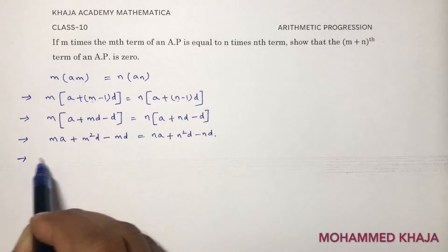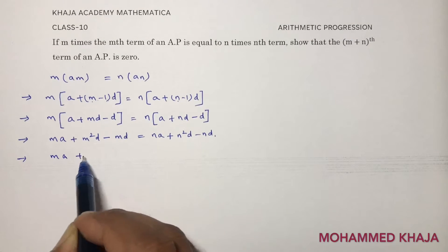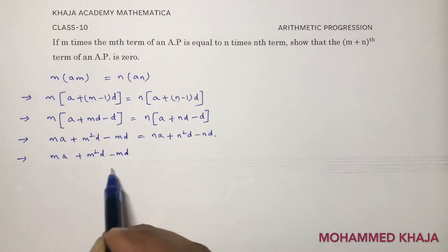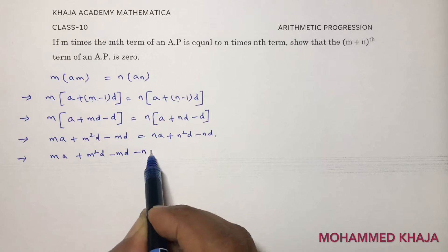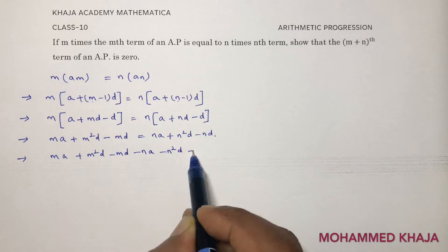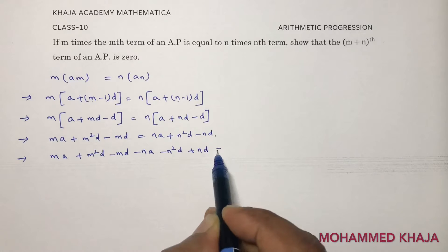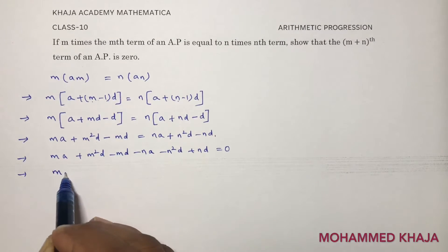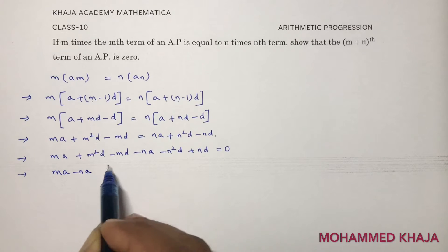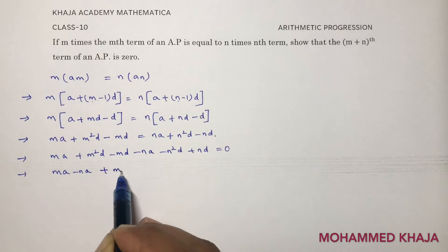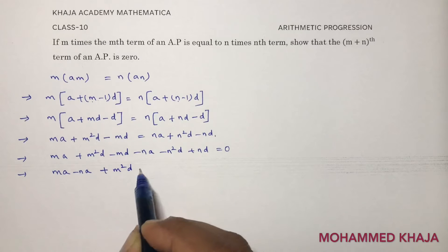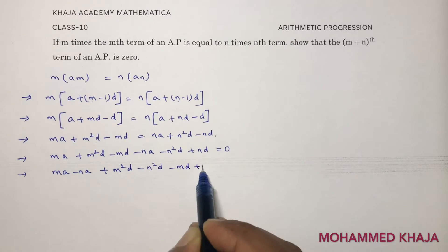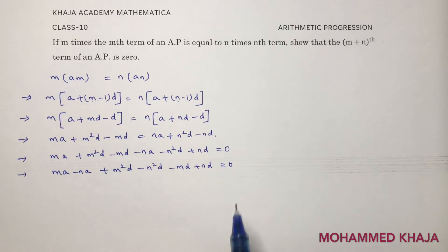Bringing all terms to the LHS: ma + m²d − md − na − n²d + nd equals 0.